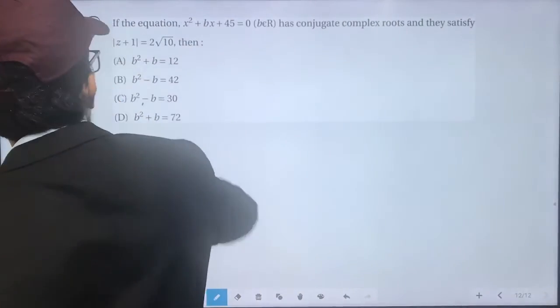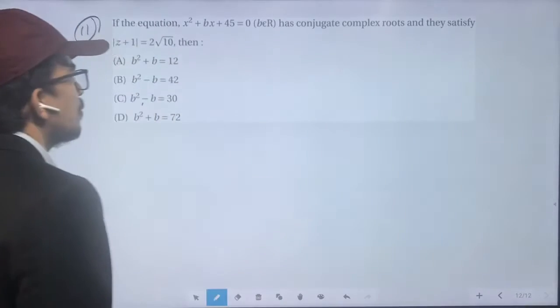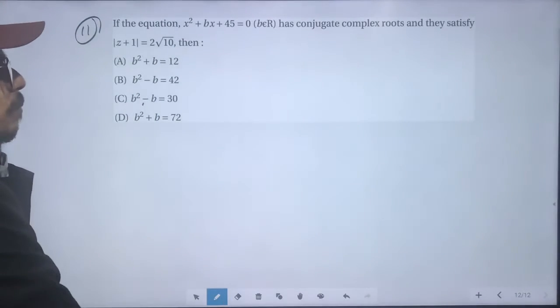If the equation x² + bx + 45 = 0 has conjugate complex roots and they satisfy |z + 1| = 2√10, then we need to find the values.